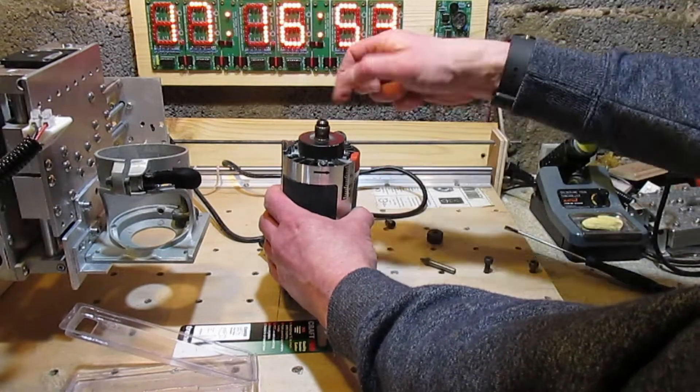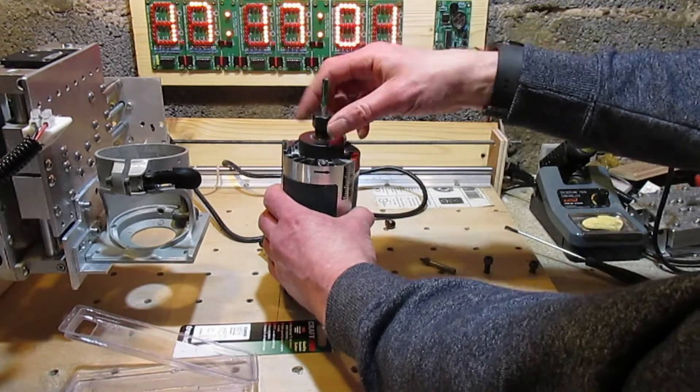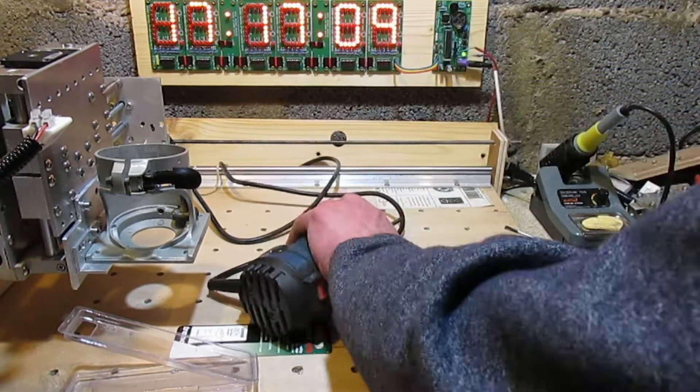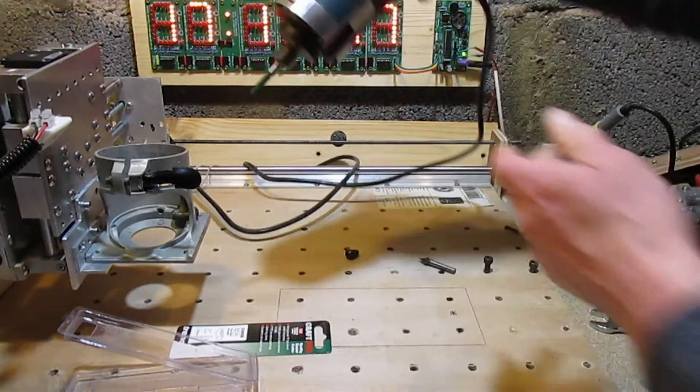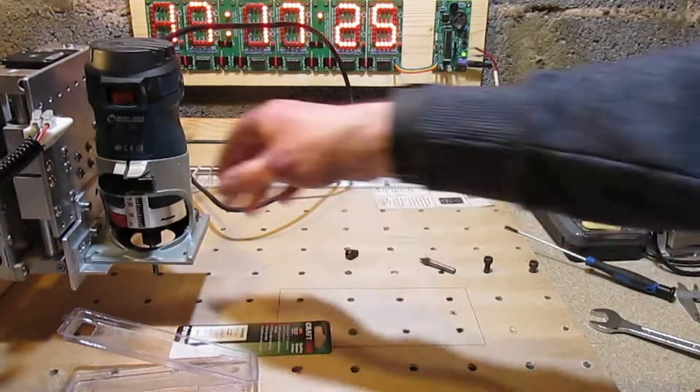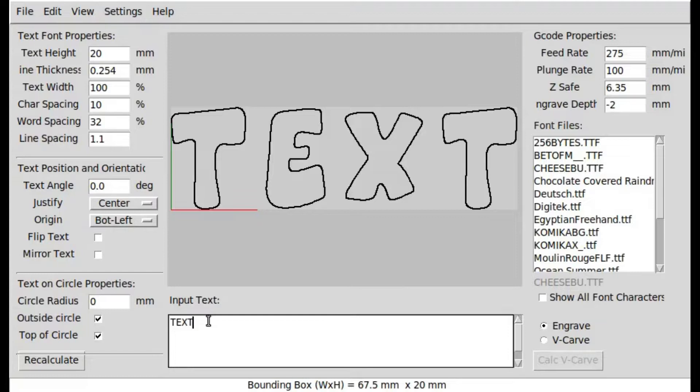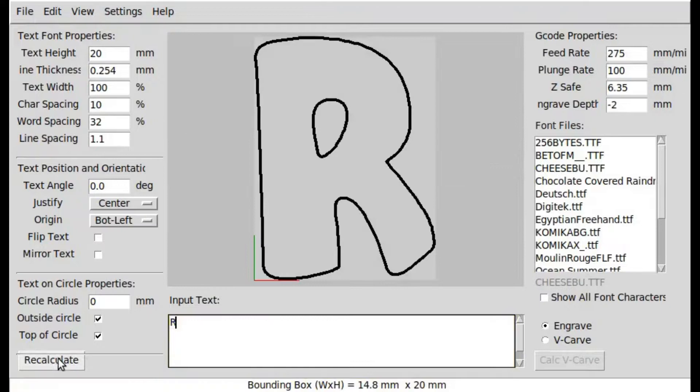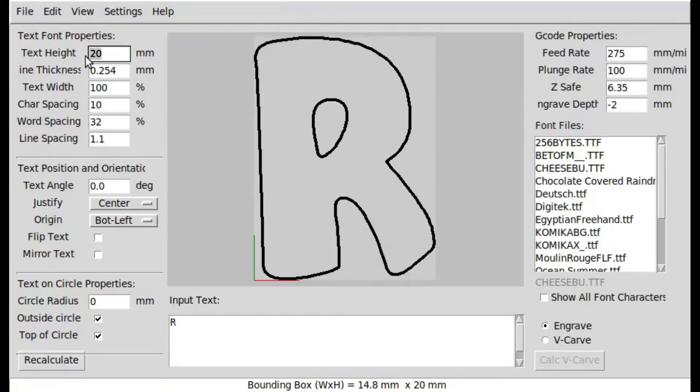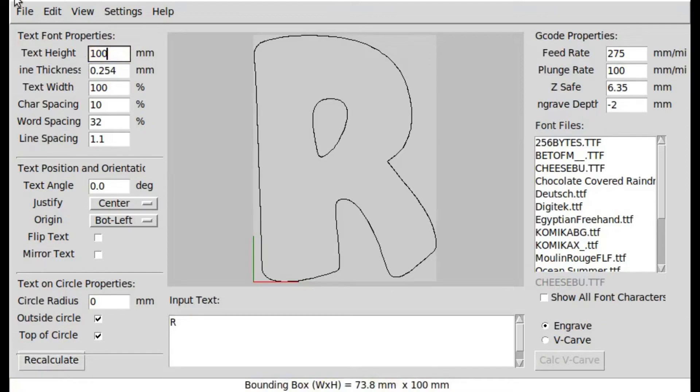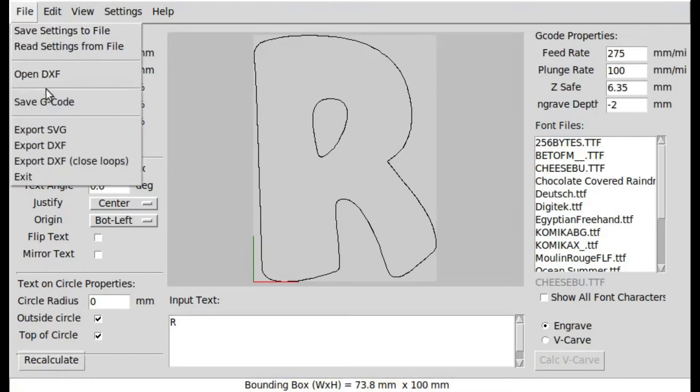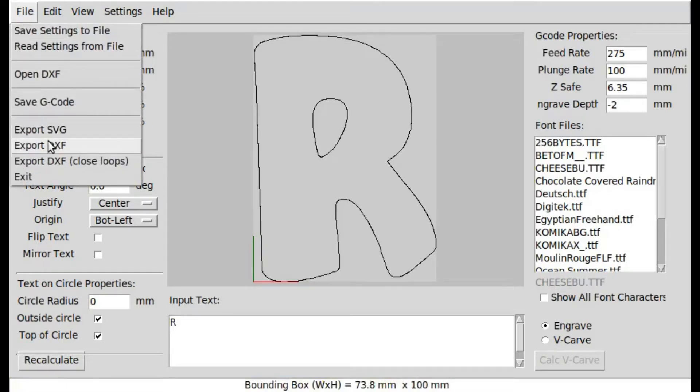I used F-Engrave to create the letter R, set the height to 100 millimeters, recalculated it, and exported it as a DXF file.